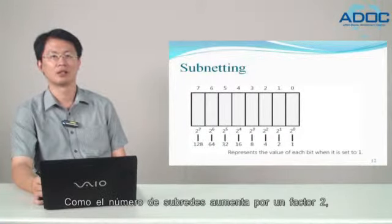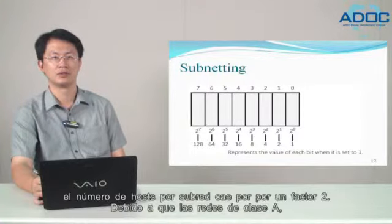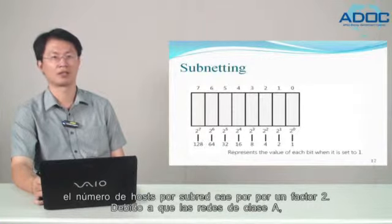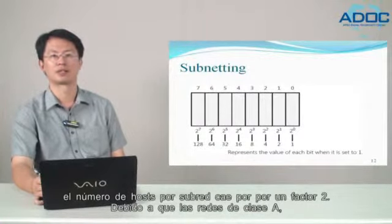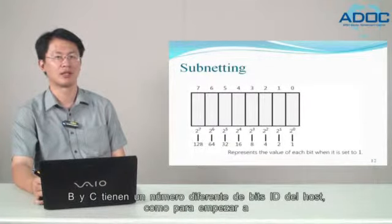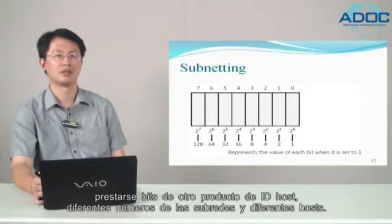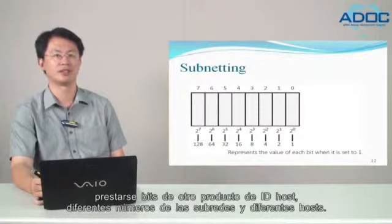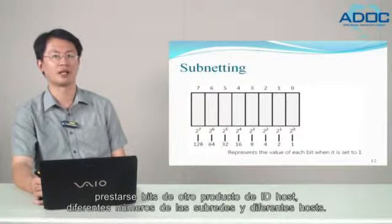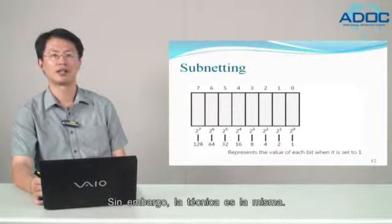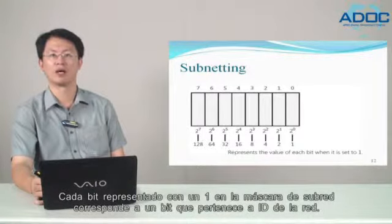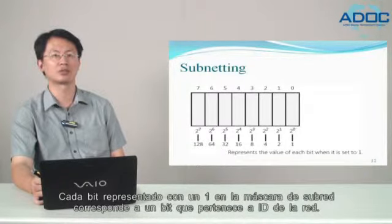As the number of subnets goes up by a factor of two, the number of hosts per subnet goes down by a factor of two. Because Class A, B, and C networks have a different number of host ID bits to start with, borrowing bits from the host ID yields different numbers of subnets and hosts. Each bit represented as a 1 in the subnet mask corresponds to a bit that belongs to the network ID.